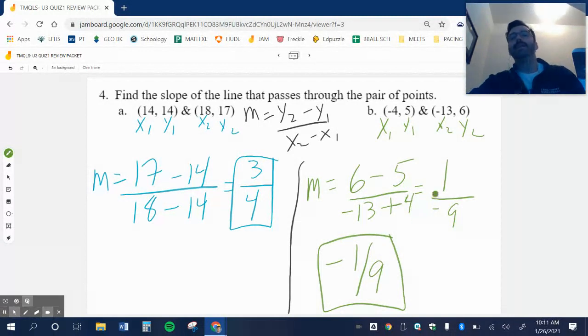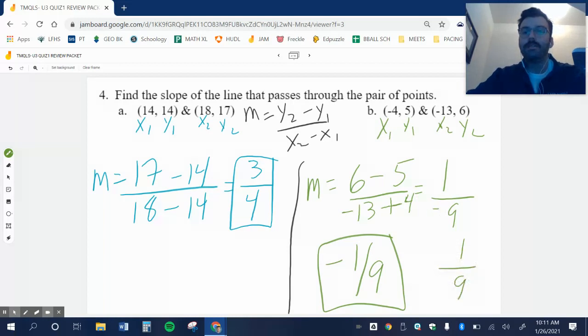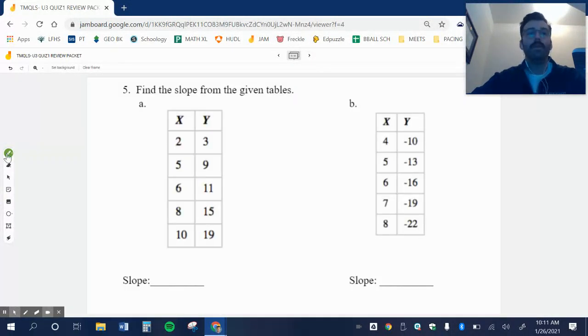Remember, you can put the negative on the top, on the bottom, or just right in front, like this. A lot of times, I will always write it in front with a numerator like that. That's how a lot of mathematicians do it. And we are mathematicians, whether you realize it or not. You guys are mathematicians.